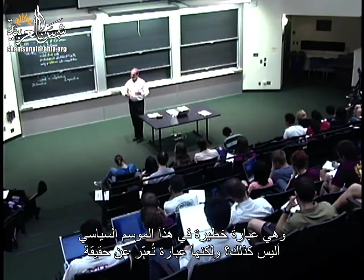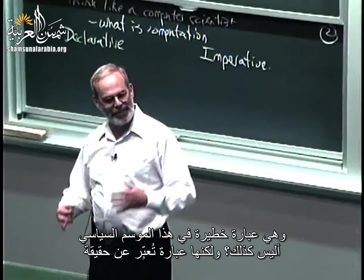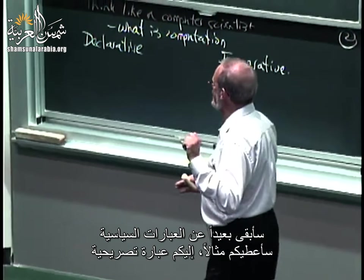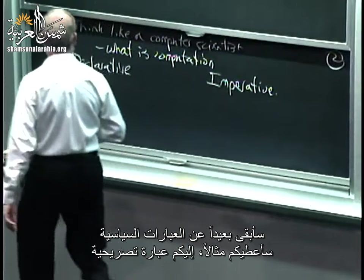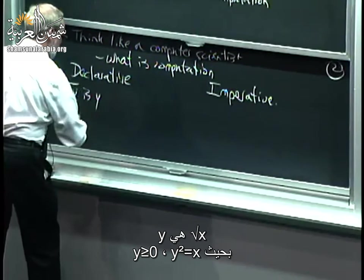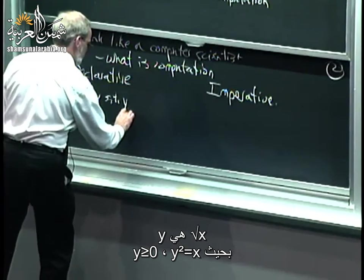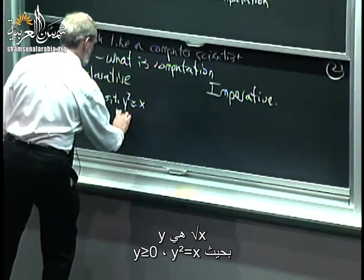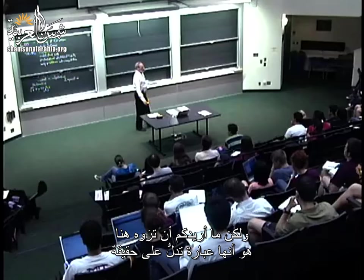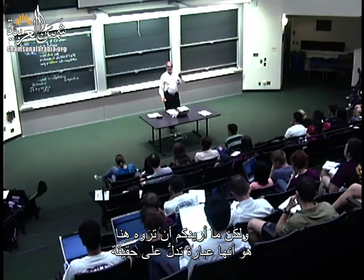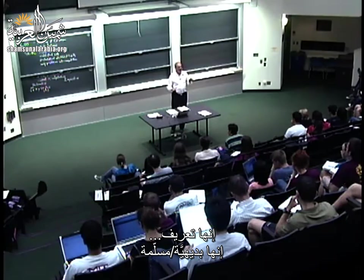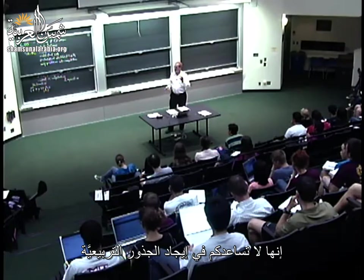Here's a declarative statement: the square root of x is that y such that y squared equals x, and y is positive. You all know that. But what I want you to see is that's a statement of fact — it's a definition, an axiom. It doesn't help you find square roots.